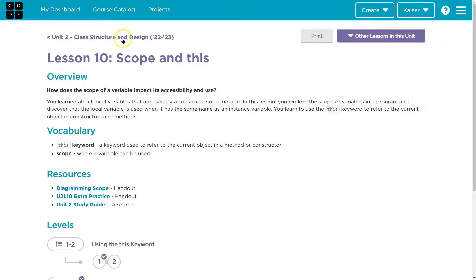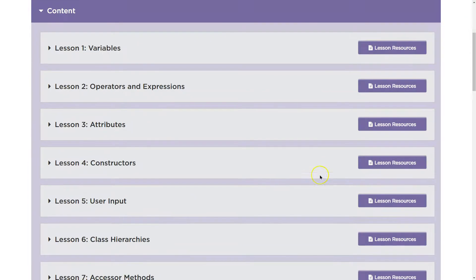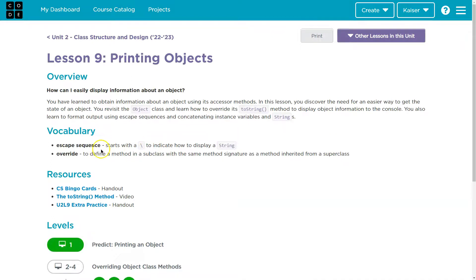We still have a few of these and a bunch of resources back here. Let me check out lesson 9. Let's see what the vocab says - do a little review. Override: to define a method in a subclass with the same method signature as a method inherited from the superclass.